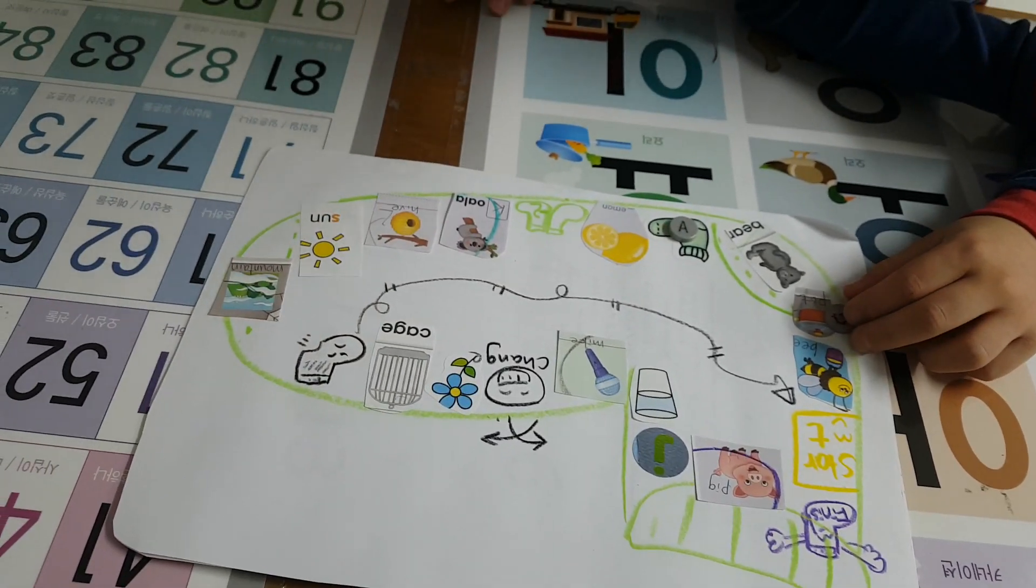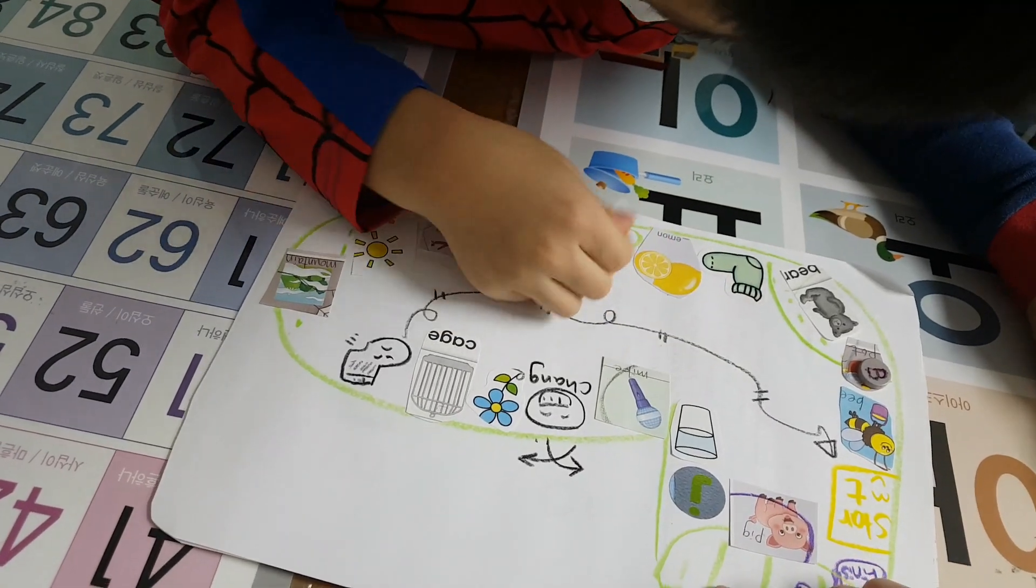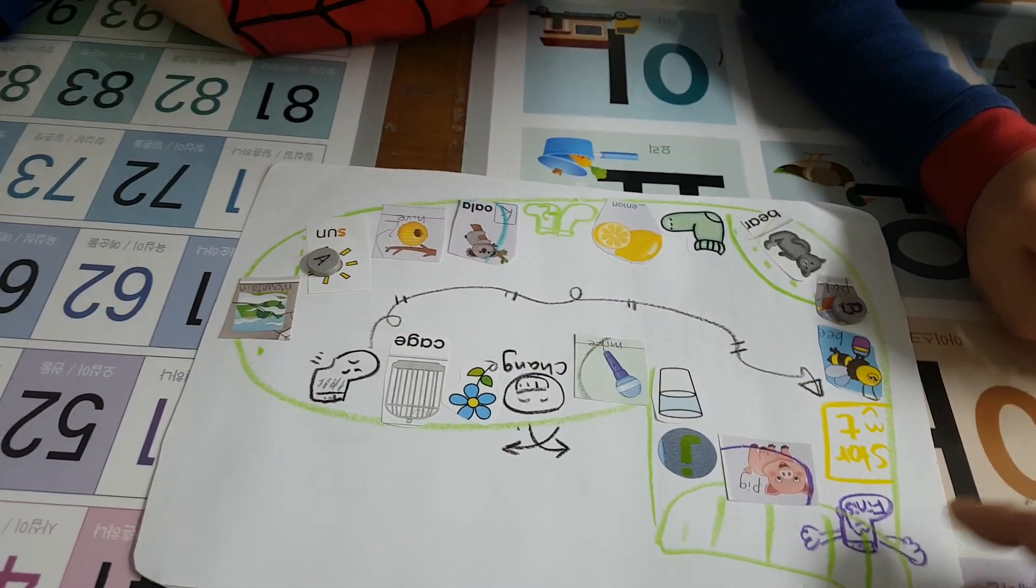Roll the dice. Go, go, go! Yes, five. One, two, three, four, five. What's this? Sun. Sun, good job. Roll.